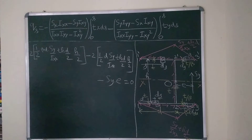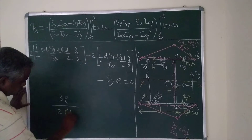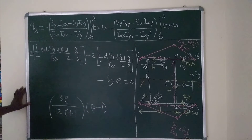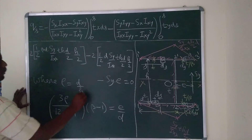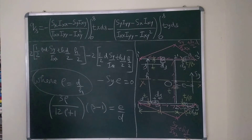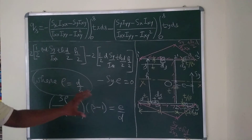After substituting IXX and simplifying, the shear center distance is: e/D = (3·ρ) / (12·ρ + 1), where ρ = D/H. This gives the shear center distance from point O on the web.